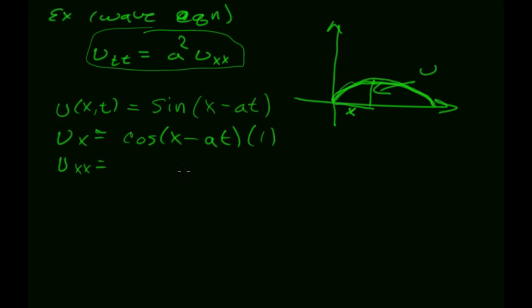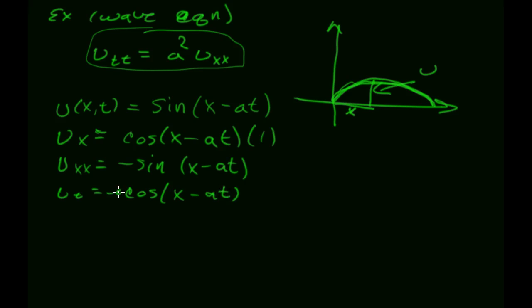U_xx is going to switch back to negative sine(x minus at). Now let's look at u with respect to t: that is going to be cosine(x minus at), but I get a coefficient of negative a. For the second partial with respect to t, cosine goes to negative sine, so I stay at negative — negative cosine gives negative sine of (x minus at).